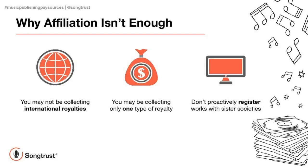Another reason why just affiliating with one society isn't going to really cover you globally is that especially in the United States, most societies focus on collecting one specific type of royalty. So in order to make sure you're collecting all the different types of royalties your music publishing generates, you would have to be affiliated with each entity. For example, in the US, if you're affiliated with ASCAP, they're going to help you collect your performance royalties, but they aren't the designated mechanical agency, so you won't be able to get your mechanical royalties through ASCAP. And going off of what Duane said earlier, if you're only with one society, there is a good chance you're going to be missing out on your royalties overseas, because your society's main focus is going to be to make sure that you're covered in the territory that they're located in. So they're not going to be actively monitoring and registering your songs outside of that territory, which means it's going to be harder for you to locate and get paid that money.